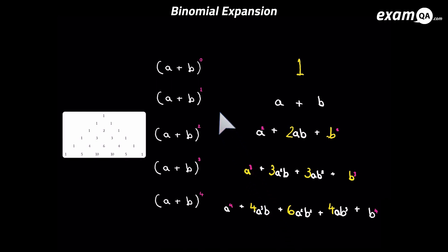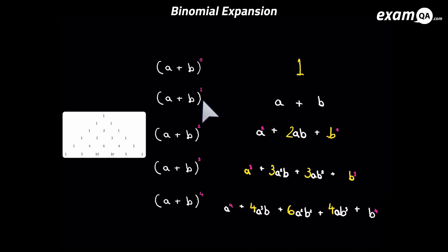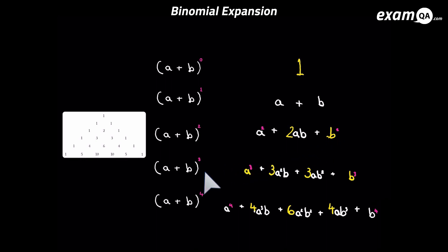Here I've got some brackets and I've expanded them all. Some of them didn't take that long — for example, a plus b to the power zero was simply just one; a plus b to the power one was simply a plus b. Then we have a plus b to the power two, which is double brackets. a plus b to the power three you might have done a few times. And I've also expanded a plus b to the power four, and they've all been nicely simplified.